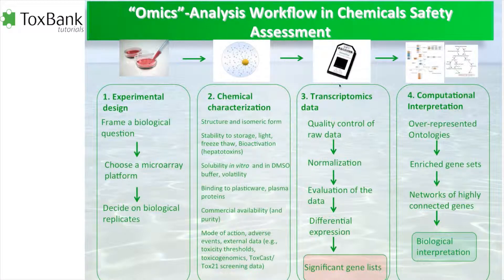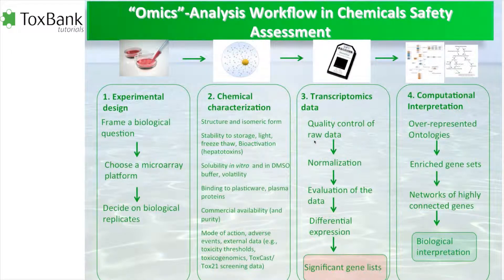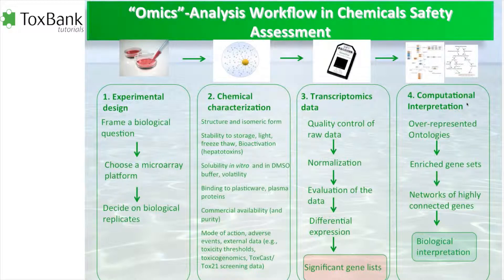This implies a chip technology using microarrays — the Affymetrix technology, which has been a gold standard in the field. You control the raw data, normalize it, evaluate it, and analyze it for differential expression to get differentially expressed genes listed. Then there is the computational interpretation: you need to find ontologies that are overrepresented and sets of genes enriched by various techniques. Eventually, you can arrive at a biological interpretation.